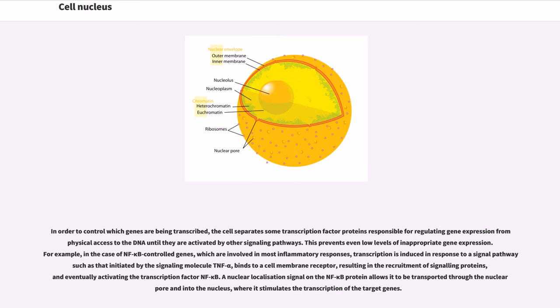In order to control which genes are being transcribed, the cell separates some transcription factor proteins responsible for regulating gene expression from physical access to the DNA until they are activated by other signaling pathways. This prevents even low levels of inappropriate gene expression. For example, in the case of NF-kappa-B-controlled genes, which are involved in most inflammatory responses, transcription is induced in response to a signal pathway such as that initiated by the signaling molecule TNF-alpha, binds to a cell membrane receptor, resulting in the recruitment of signaling proteins, and eventually activating the transcription factor NF-kappa-B. A nuclear localization signal on the NF-kappa-B protein allows it to be transported through the nuclear pore and into the nucleus, where it stimulates the transcription of the target genes.